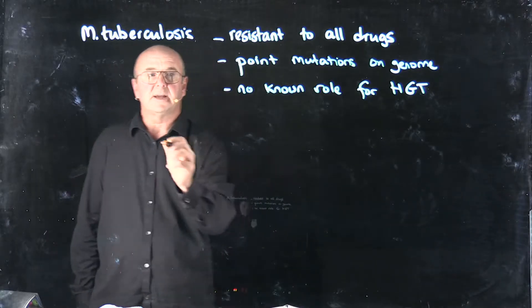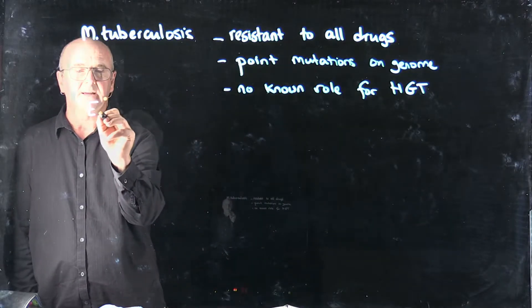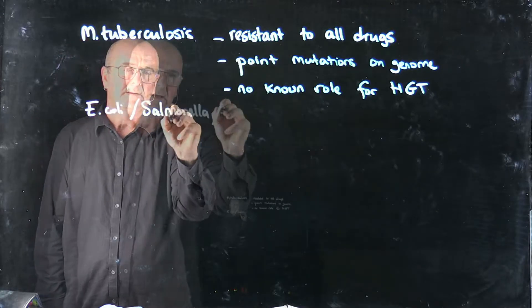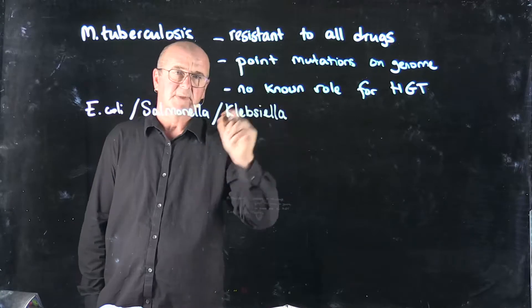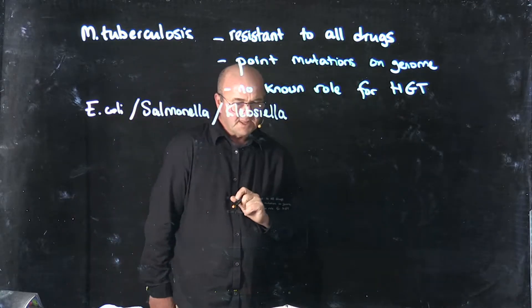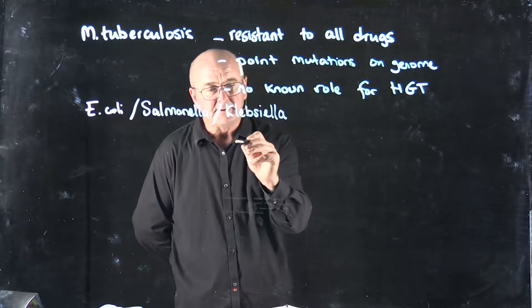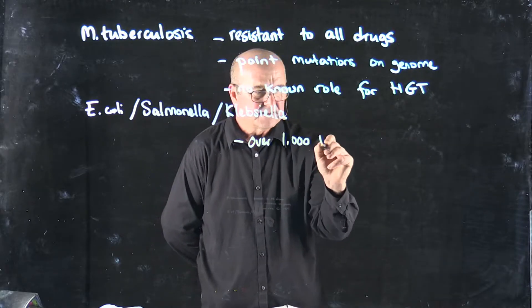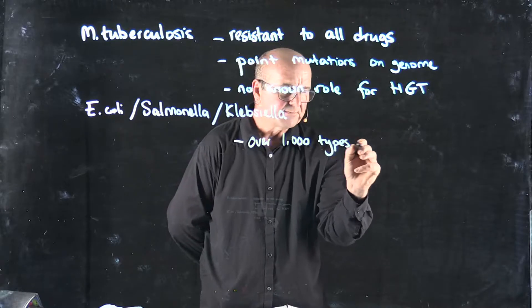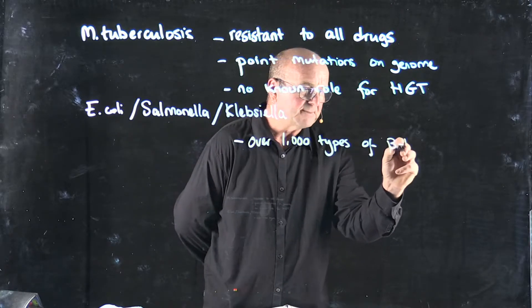If we look at things like E. coli, Salmonella, and Klebsiella, like we're studying in the course, it's a totally different story. For example, there are over 1,000 types of beta-lactamases.